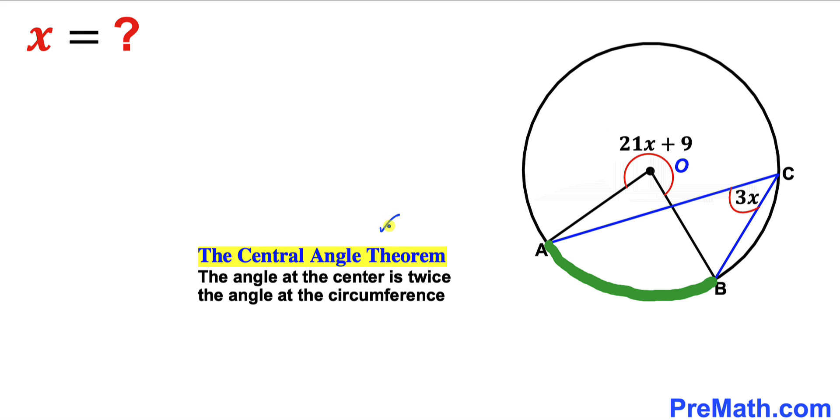Now let's recall the central angle theorem. According to this theorem, the angle at the center is twice the angle at the circumference. We can see our angle at the circumference is 3x. So therefore our angle at the center over here is going to be twice of that one.